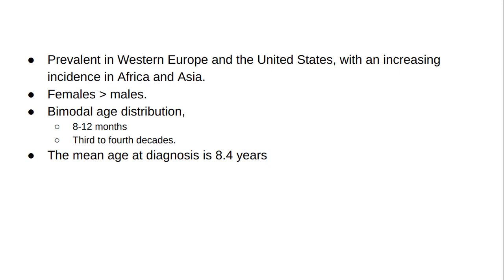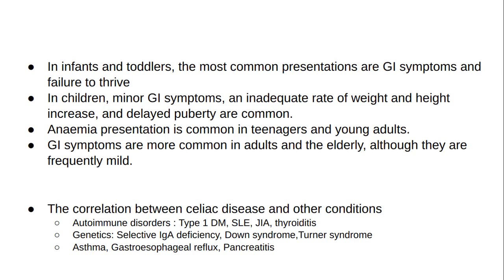Females are affected slightly more than males. The age distribution of patients with celiac disease is bimodal: the first peak at 8 to 12 months and the second in the third to fourth decades. The mean age at diagnosis is 8.4 years. There is a correlation between the age at which symptoms first appear and the kind of presentation.